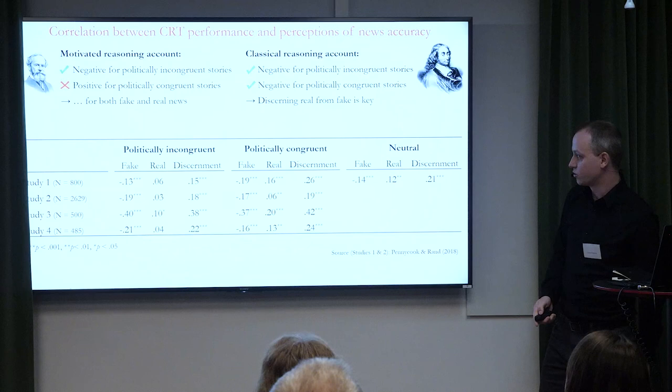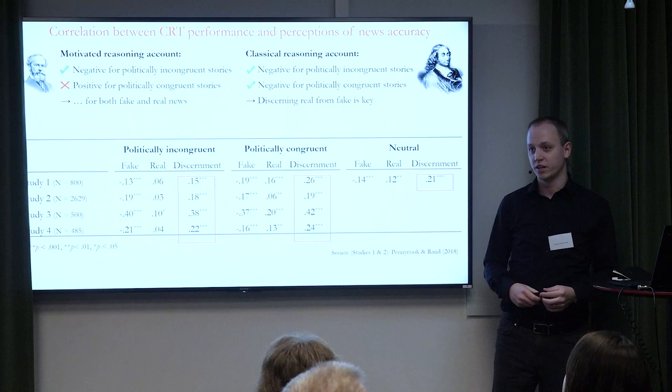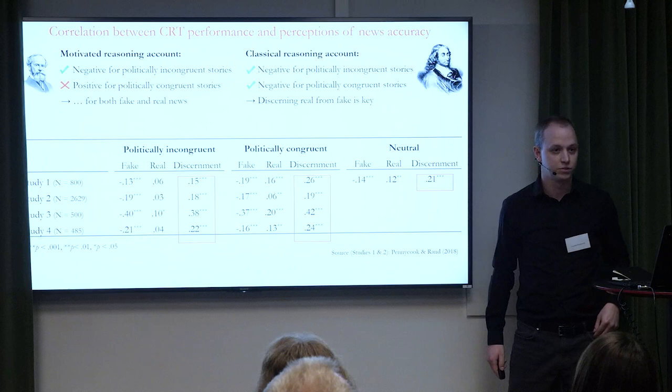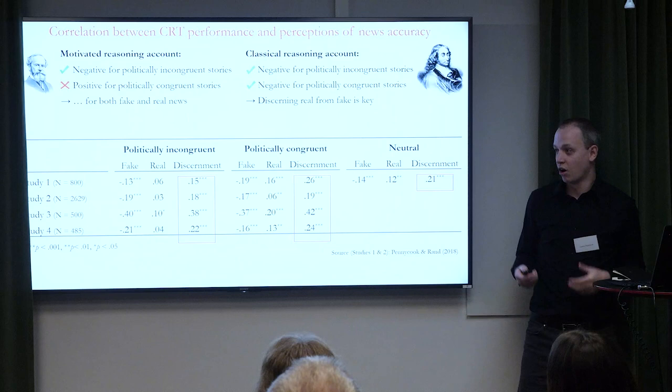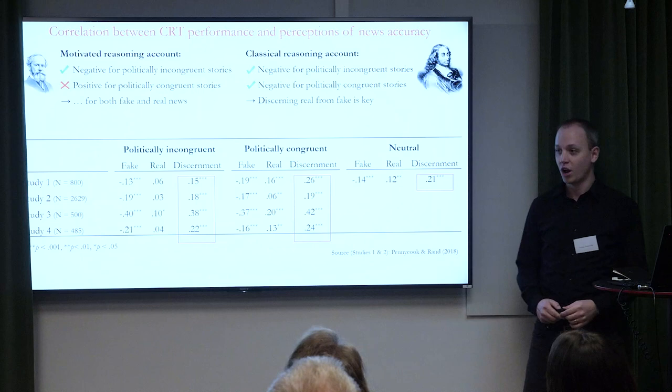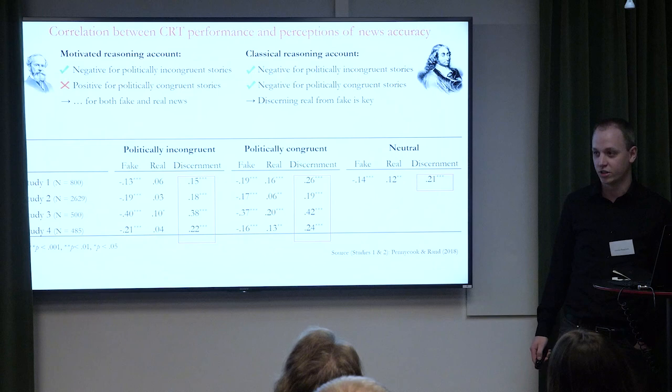That's a knock against the motivated reasoning account. The classical reasoning account predicts that people who are better at reasoning are better able to discern between true and false content overall — and that's what you see in every single case. We've done the study dozens of times. We've done it in Ukraine, Italy, France, and Canada and gotten the same results. It's a remarkably consistent finding: people who are better at reasoning are better able to discern between what's true and false in terms of news content.